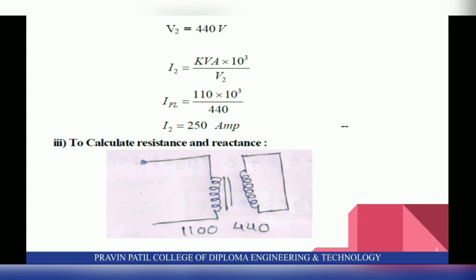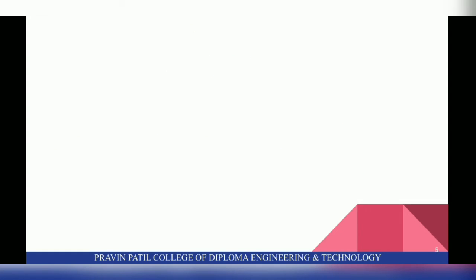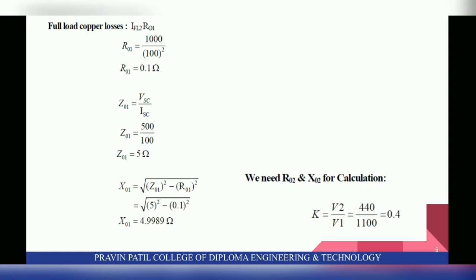Next, to calculate resistance and reactance. As seen in the image, the primary side is 1100 V and secondary is 440 V. To find full load copper losses, the formula is IFL² × R01. So R01 = 1000 / 100² = 0.1 Ohm. Next, Z01 = VAC / ISC = 500 / 100 = 5 Ohm. Next, X01 = √(Z01² − R01²) = √(5² − 0.1²), so X01 becomes 4.9989 Ohm.